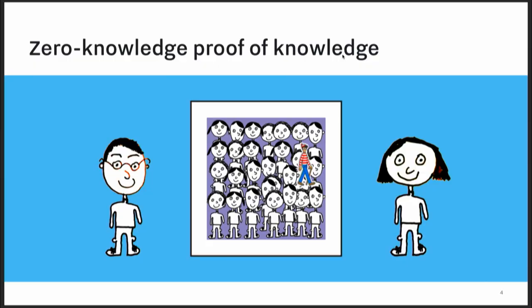One way to get an intuition of how a zero-knowledge proof works is with this visual example with Peggy the Prover and Victor the Verifier. Peggy the Prover has spent hours and hours solving this Where's Waldo puzzle and finally found Waldo. She wants to prove to Victor that she has done all of the work to solve this puzzle, but she doesn't want to just point to where Waldo is — because then Victor could take this knowledge and pretend he spent hours solving the puzzle and tell everyone else.